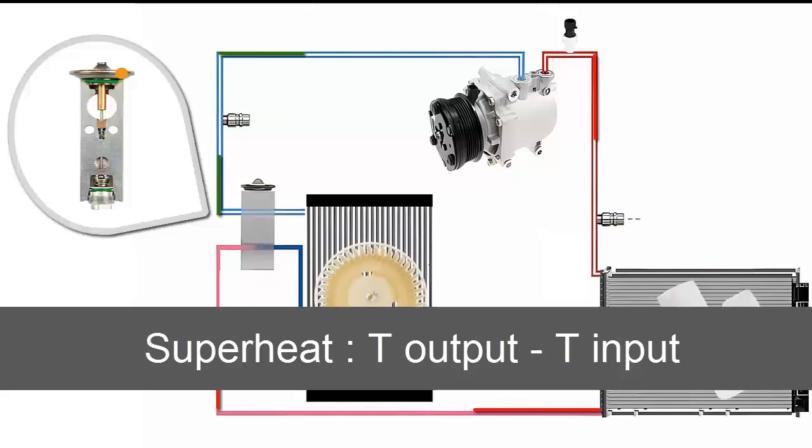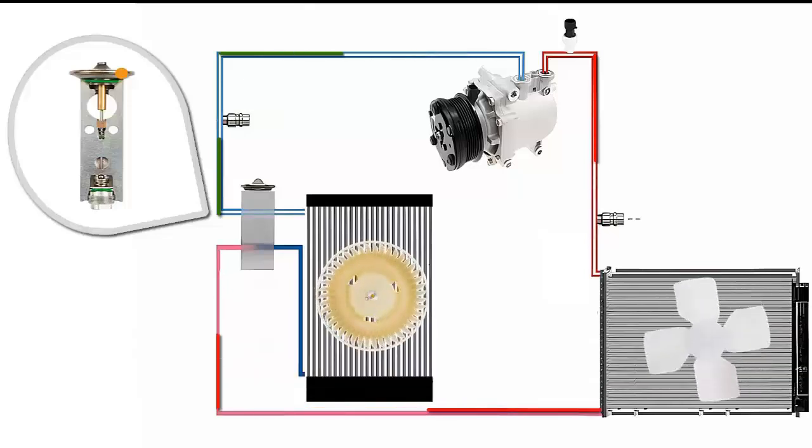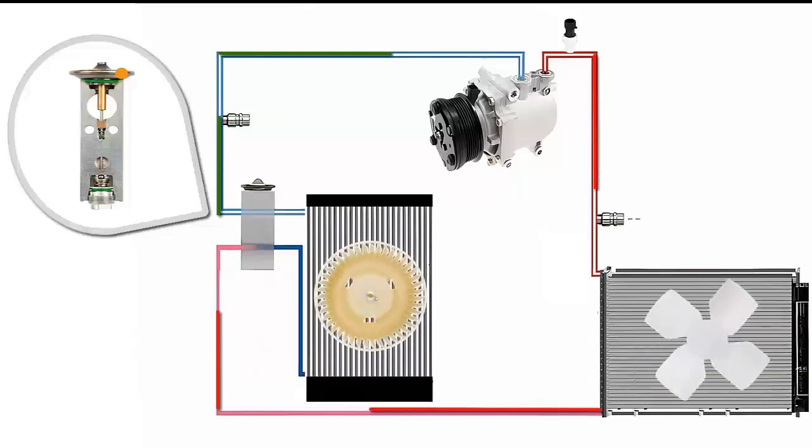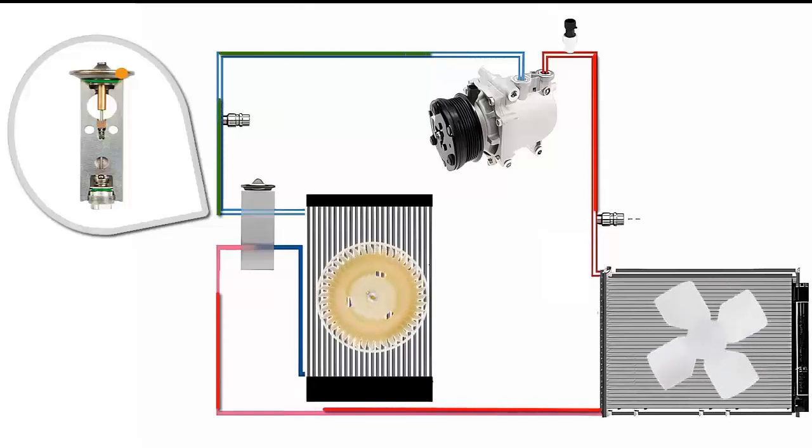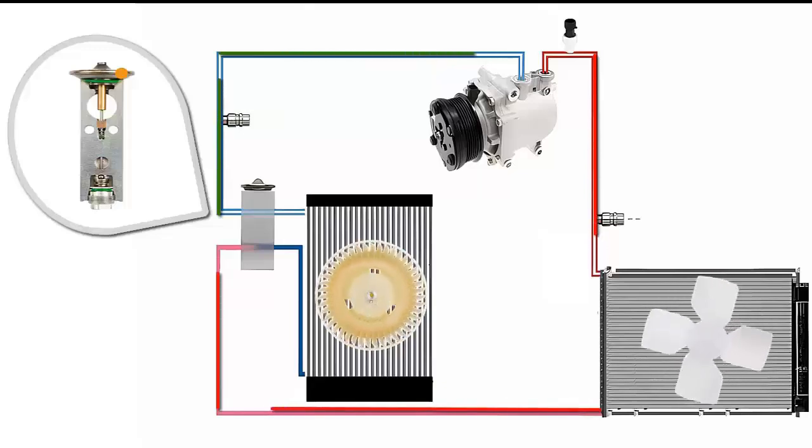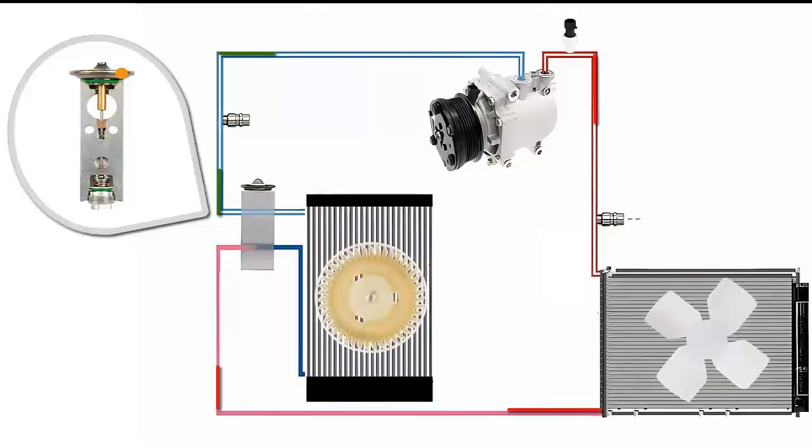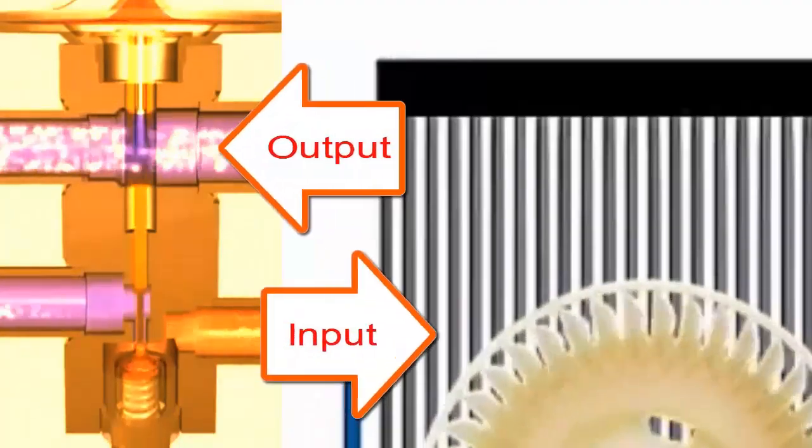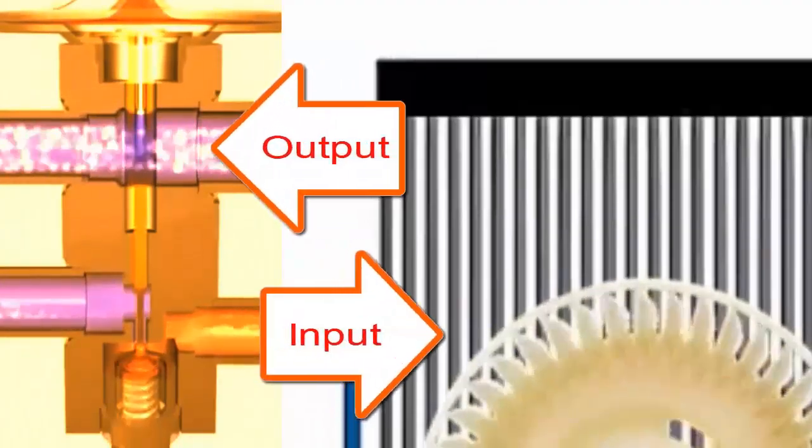For example, on a summer day, when the refrigerant temperature at the evaporator outlet rises, it indicates high superheat and the need for more refrigerant in the evaporator, so the block valve allows more refrigerant gas flow to the evaporator.